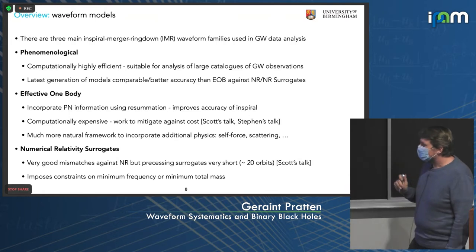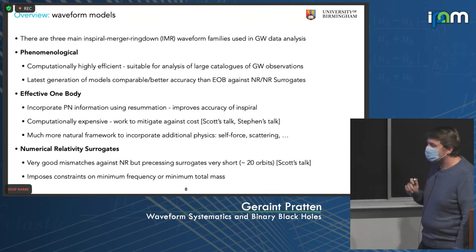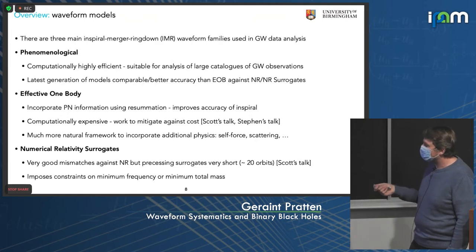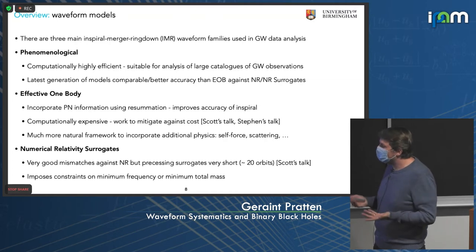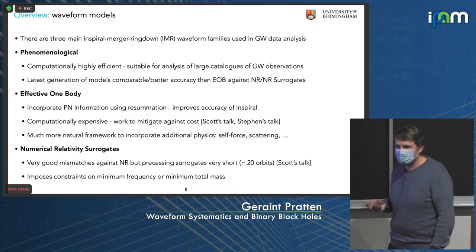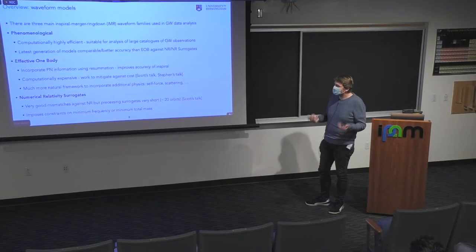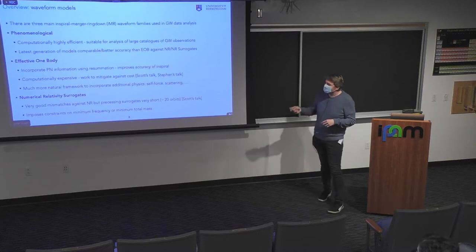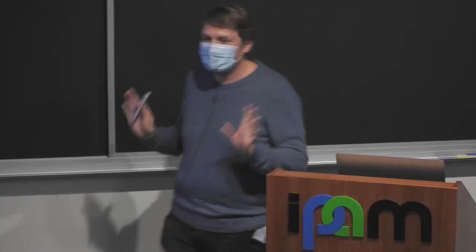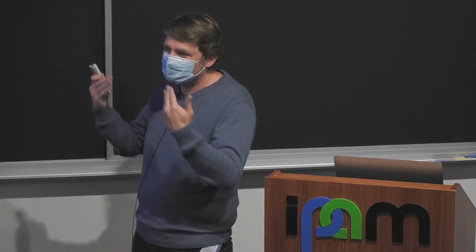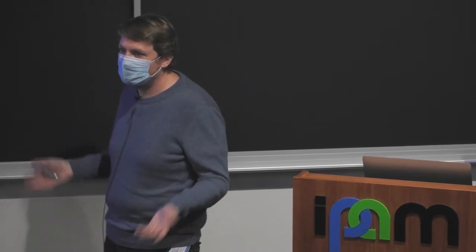Finally, we have numerical relativity surrogates. These have exquisitely good mismatches against numerical relativity, but a caveat is that the current generation of surrogates are particularly short — around 4,000 M, maybe around 20 orbits — so unless you hybridize, they impose severe constraints on minimum frequency and minimum total mass. The aligned-spin surrogate does have hybridization, but they're still native to the time domain. In the near future we'll scale up to hundreds of binary black holes, and if you want to analyze sub-threshold triggers as well, it becomes even more.